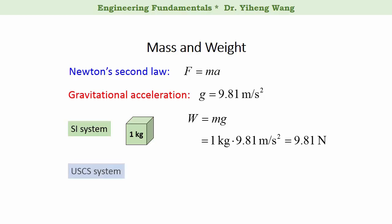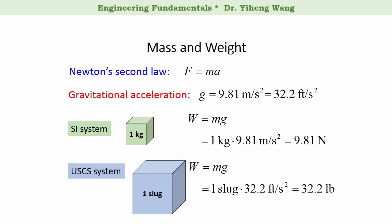In US customary unit system, for an object with a mass of one slug, its weight is also determined using this equation. But the gravitational acceleration G needs to be converted into the US customary unit system as well, which is approximately 32.2 foot per second squared. Therefore, the weight of an object with a mass of one slug is calculated this way to be 32.2 pound.